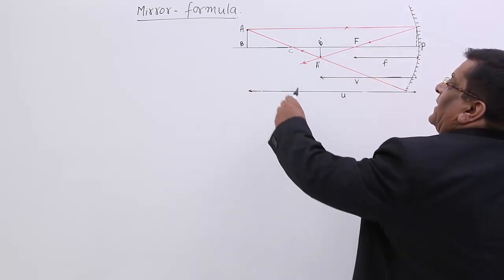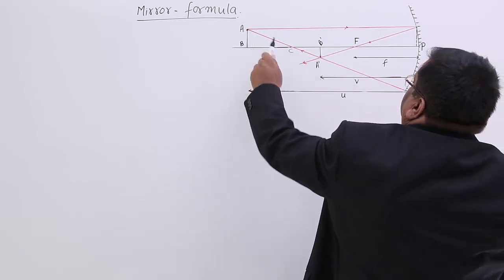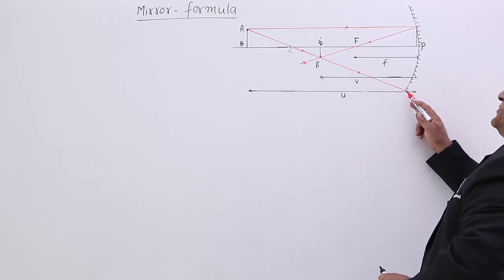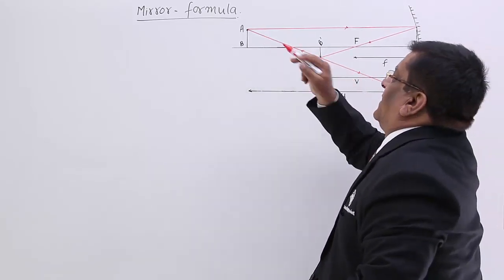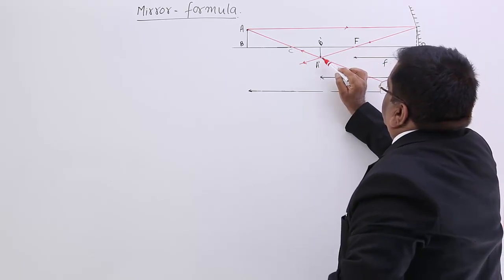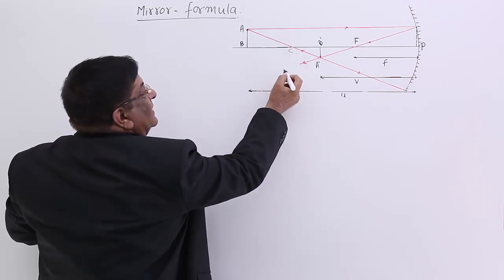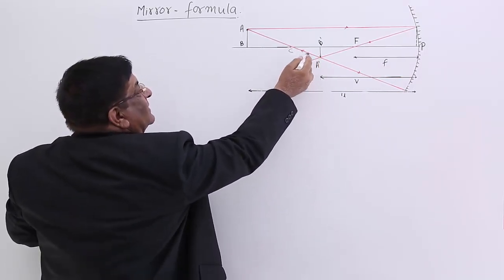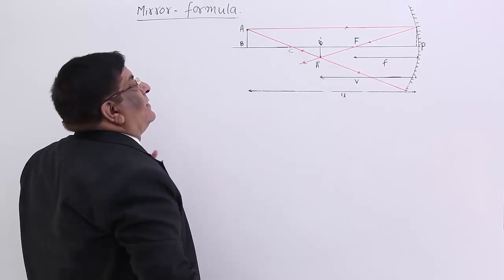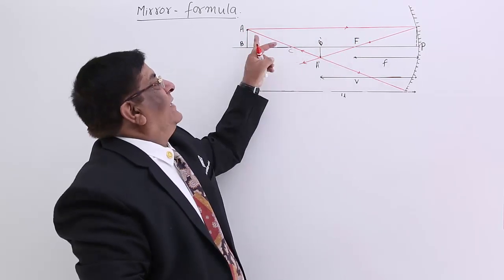It goes in this direction. The other one which is passing through center is reflected back in the same direction — it goes to the mirror from center, in radial direction, and at right angle it reflects back in the same direction. Now this reflected ray and this reflected ray intersect at this point, and when we observe from here, both are coming from this point.